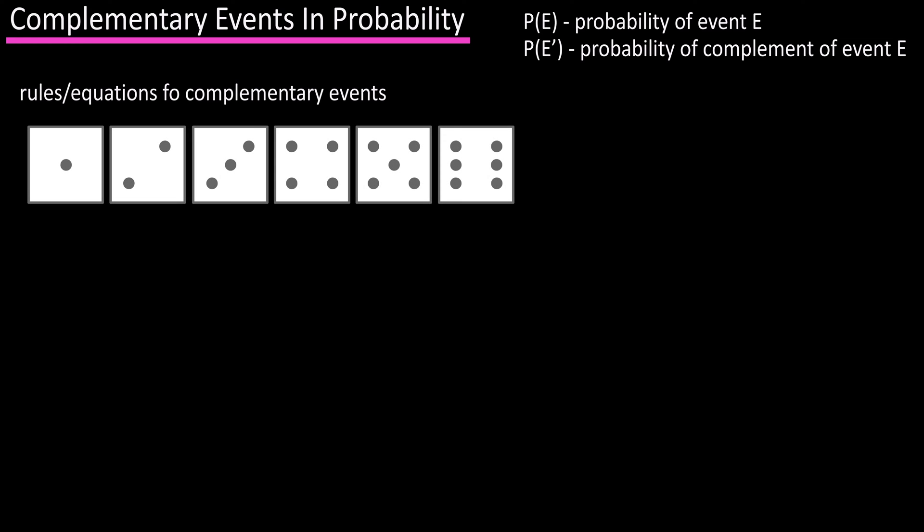Looking at the sample space for a die roll, we know that each of these has the probability of 1 over 6, and if we add them up, we get 1. So, the probability of all outcomes in the sample space equals 1 or 100 percent.